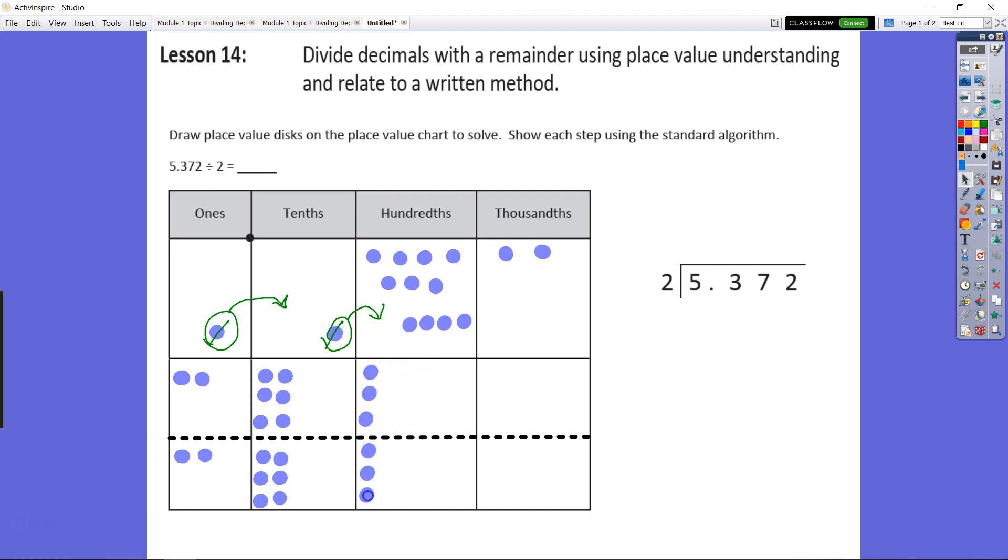Dividing seventeen hundredths into two groups, we get eight in each group with one hundredth remaining.